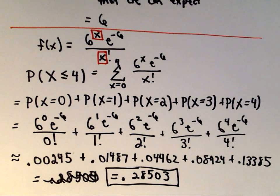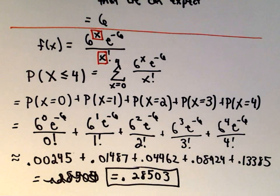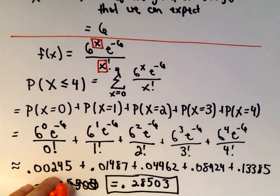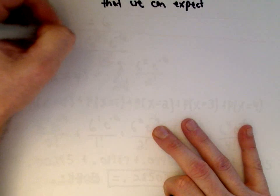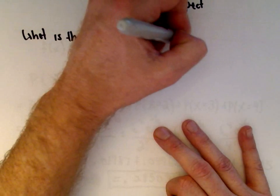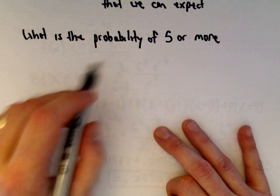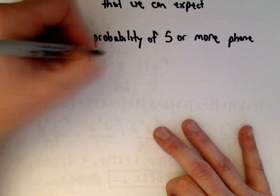Let's ask one more question. We already answered the probability of getting four or fewer phone calls. Now let's calculate the probability of five or more phone calls during a nine-minute period.